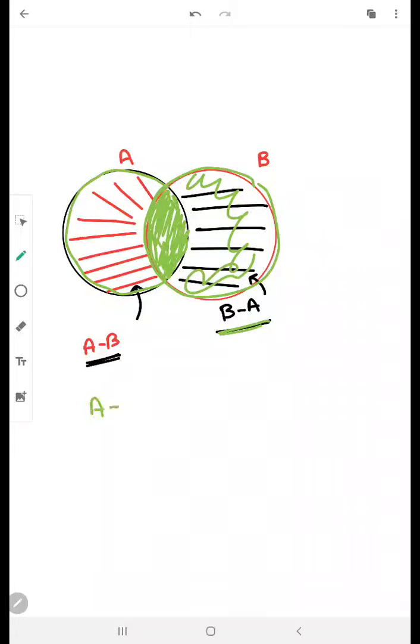So how we can represent A-B? A-B is actually equal to A minus A intersection B. And similarly, B minus A is equivalent to B minus B intersection A.